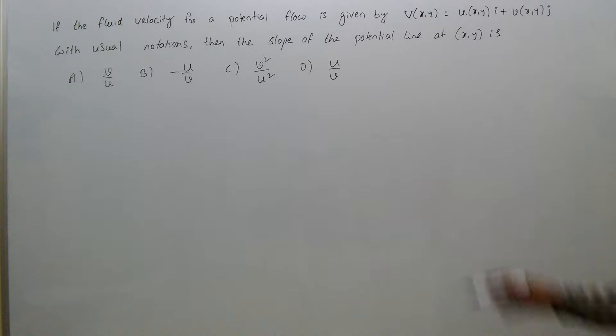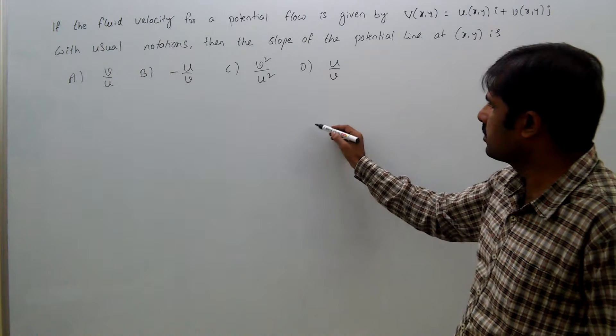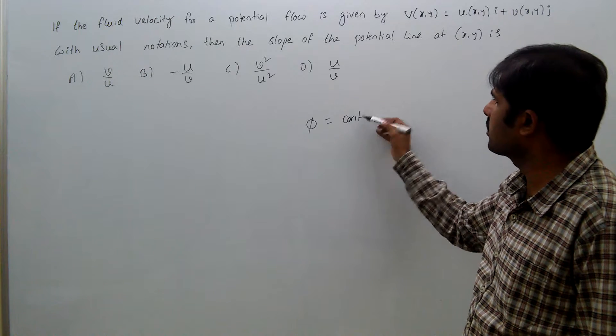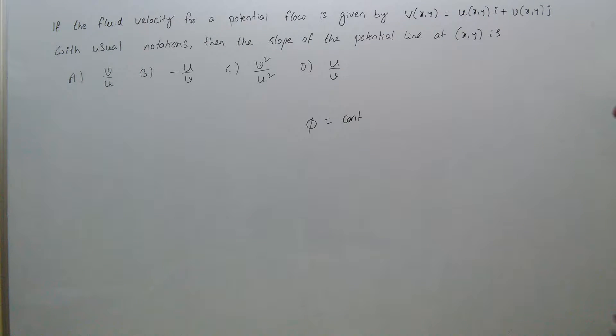Potential line means velocity potential φ = constant. This is the potential line equation.